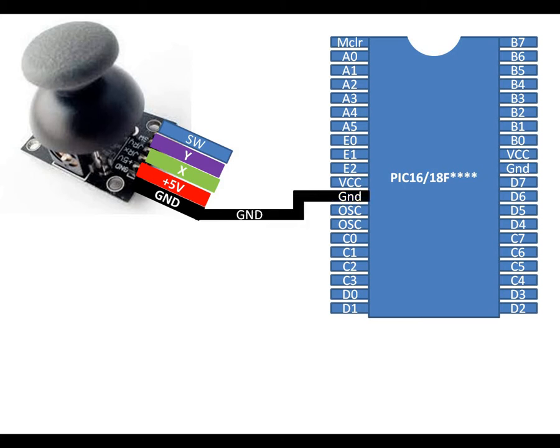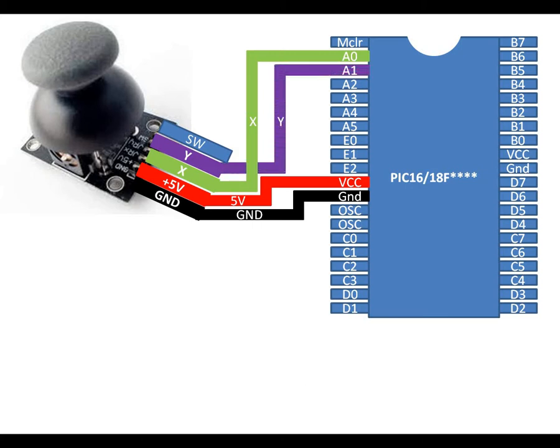To make connections with the PIC we go as follows: ground to ground, 5 volt to 5 volt, X-axis to any ADC channel — I am using pin A0, that is channel number 0 — and for Y-axis I am using A1, ADC pin A1. In this video I am going to make a small mini project for you which you can follow as an example.